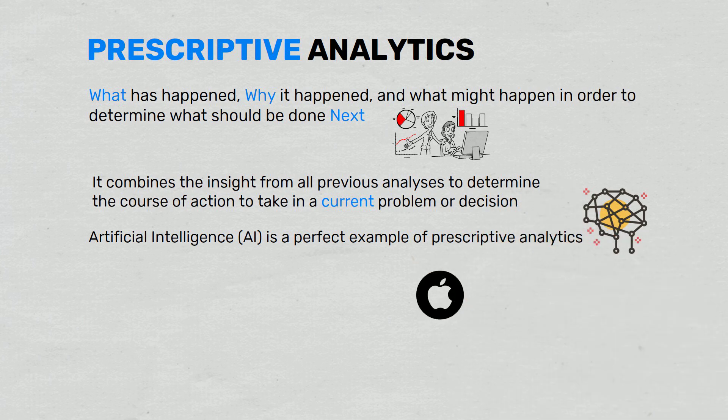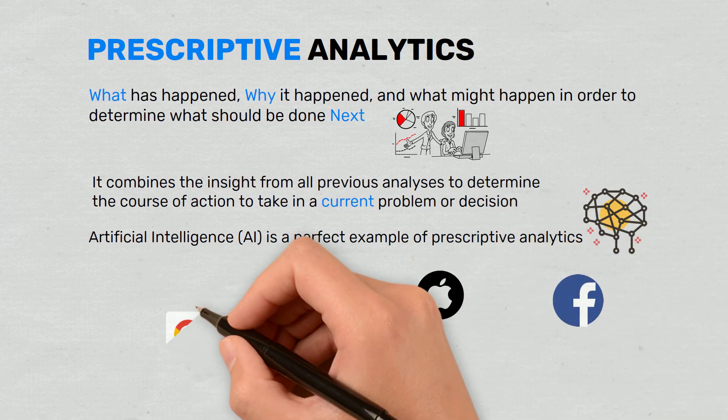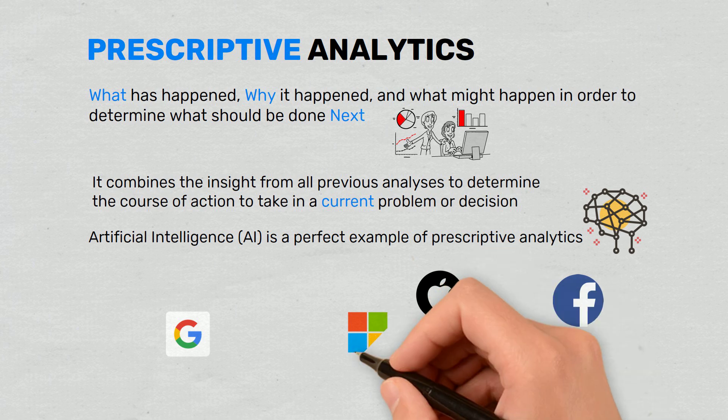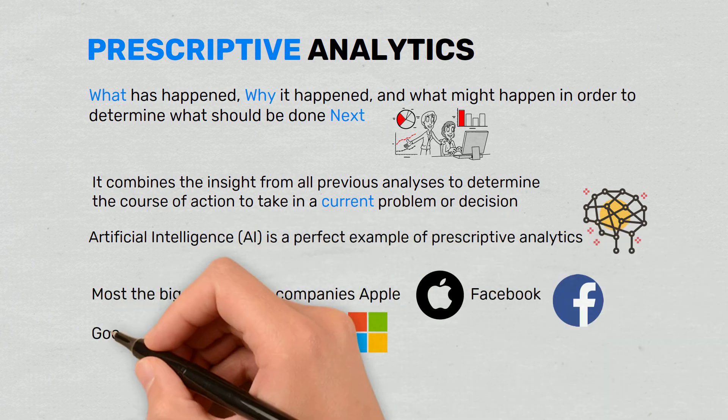Most big data-driven companies—Apple, Facebook, Google, Microsoft—are utilizing prescriptive analytics and AI to improve decision-making.